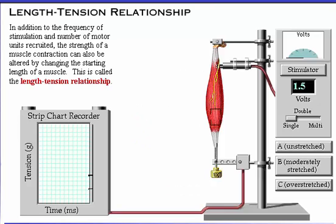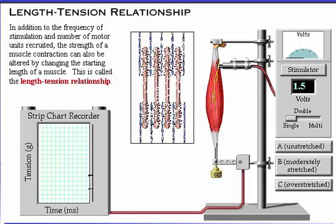In addition to the frequency of stimulation and number of motor units recruited, the strength of a muscle contraction can also be altered by changing the starting length of the muscle. This is called the length-tension relationship.